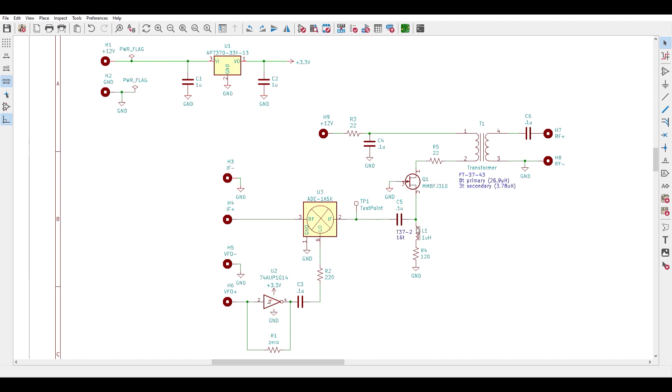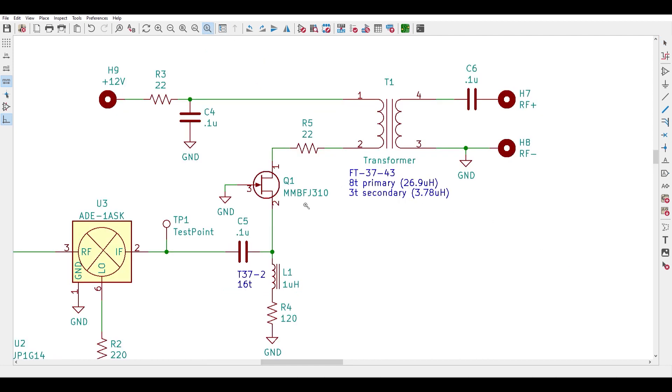One simple solution presented in Figure 5.33 of EMRFD is to use a common gate JFET amplifier at the mixer output, in this case a J310. It doesn't provide much gain, around 5 dB in the manner that I've biased it, but it does provide good isolation for the mixer output.